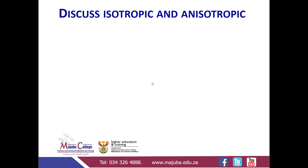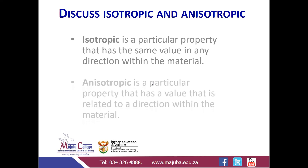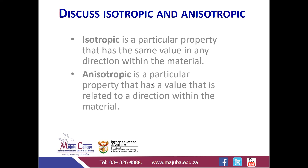We're going to discuss isotropic and anisotropic. You must be able to define — or recall from the level 2 materials — that isotropic is a particular property that has the same value in any direction within the material. Anisotropic material is a particular property that has a value that is related to the direction within the material. Let's focus on anisotropic because it is a property of timber. Isotropic, for example, is steel. Anisotropic is timber.